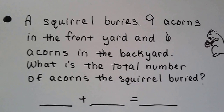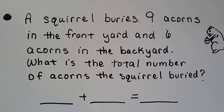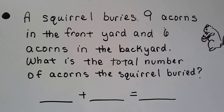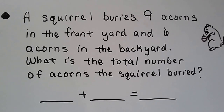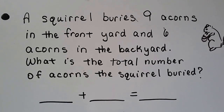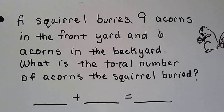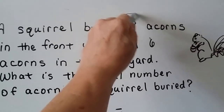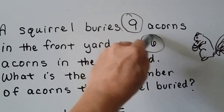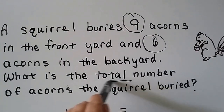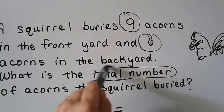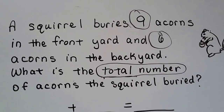A squirrel buries nine acorns in the front yard and six acorns in the backyard. What is the total number of acorns the squirrel buried? We need to circle our important words or numbers. We have a nine, we have a six, and it says 'the total number' — that's important, it's telling us to add.